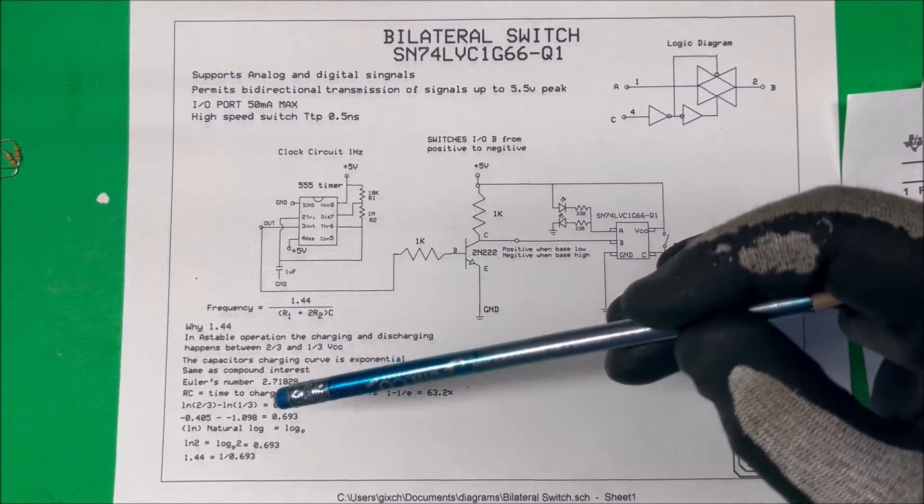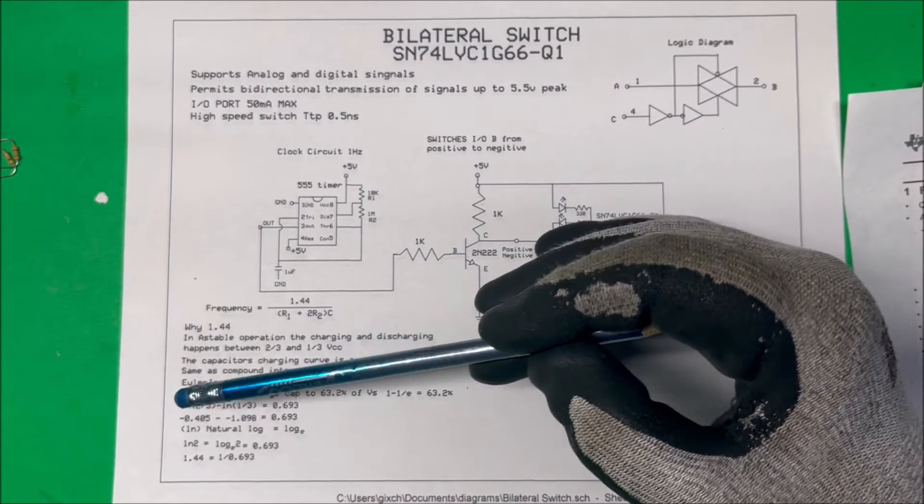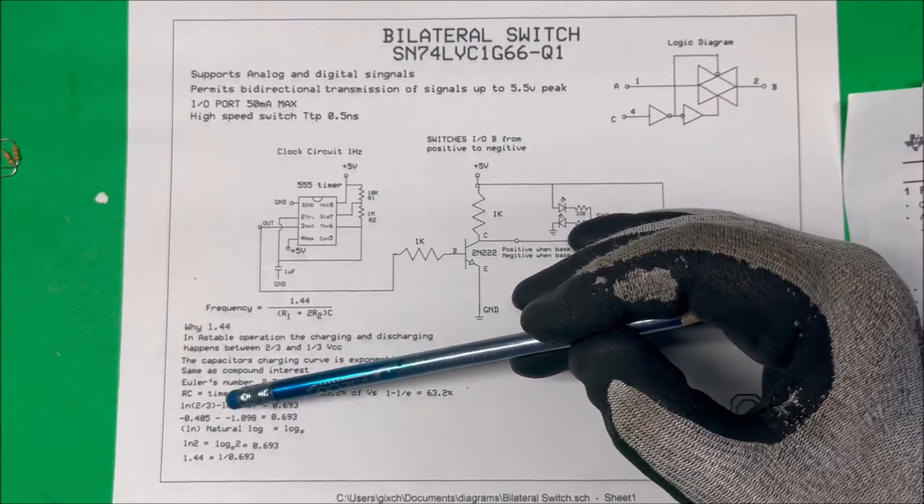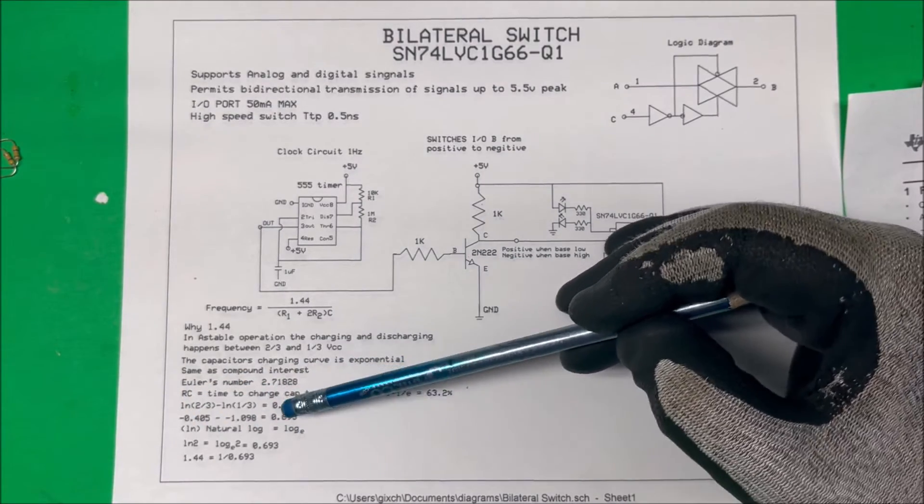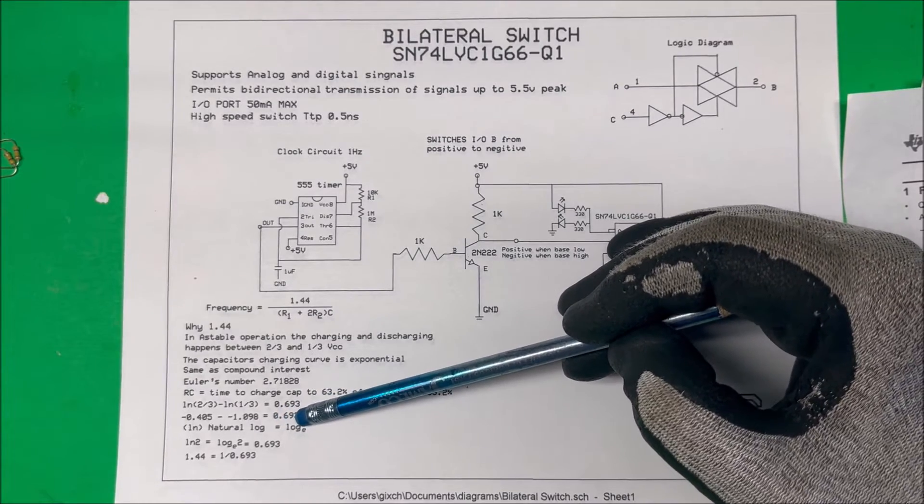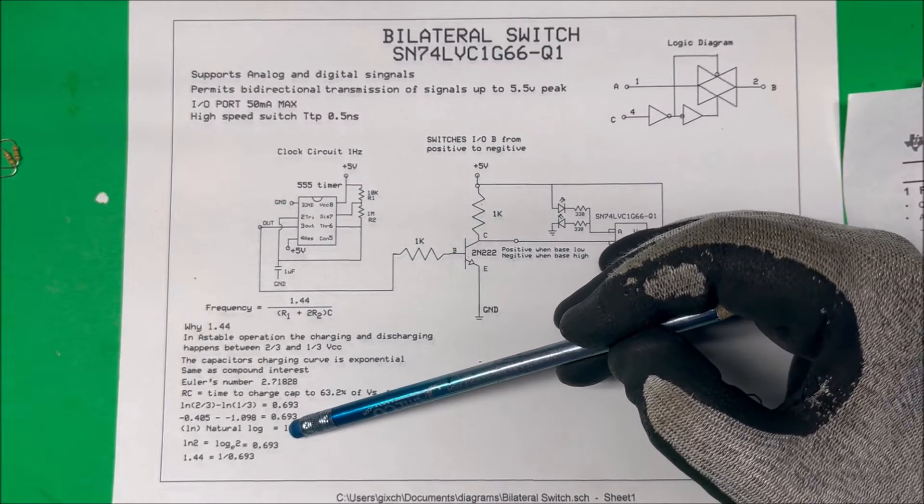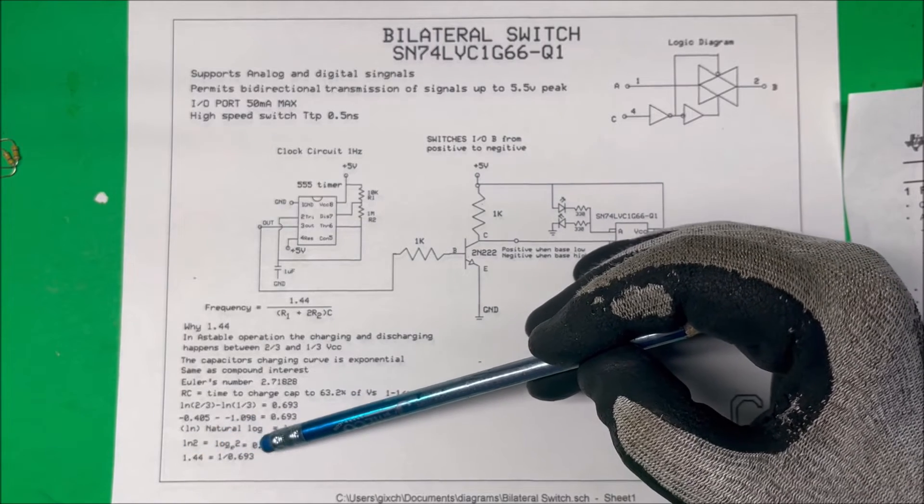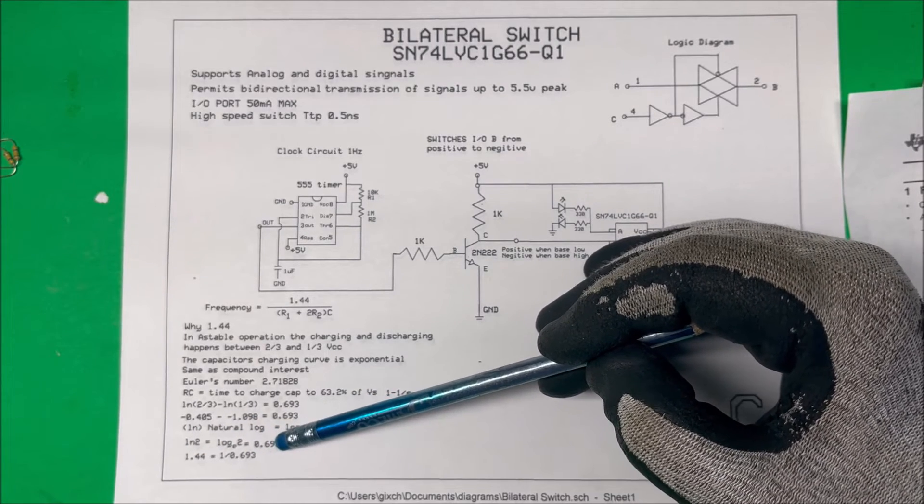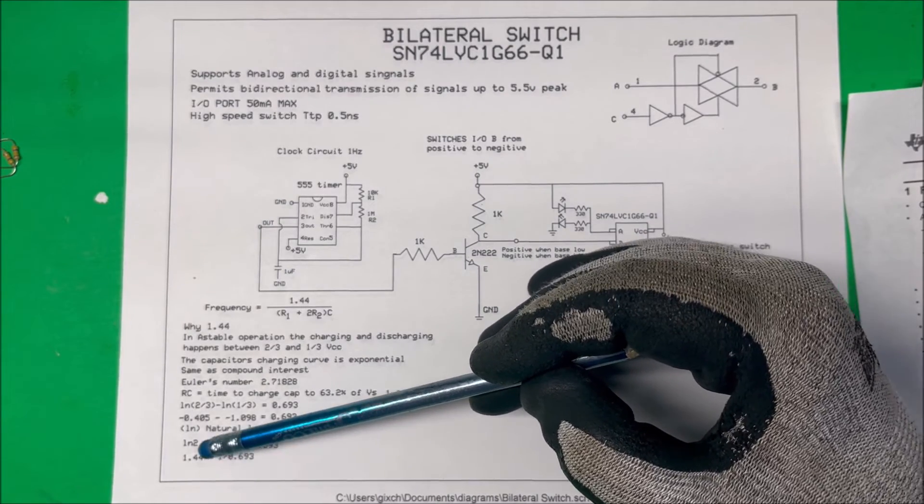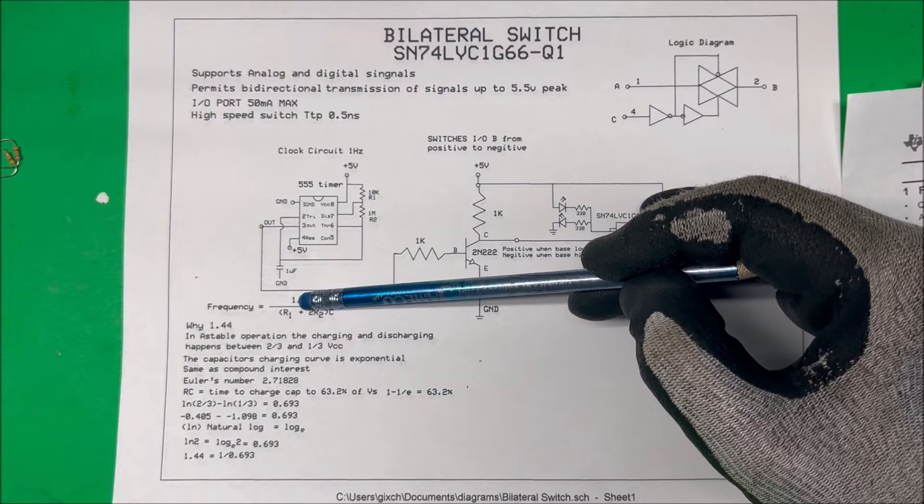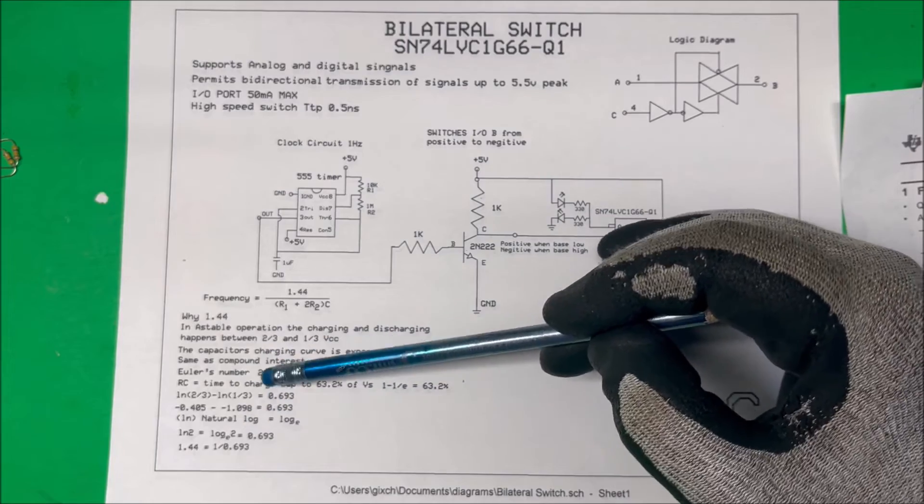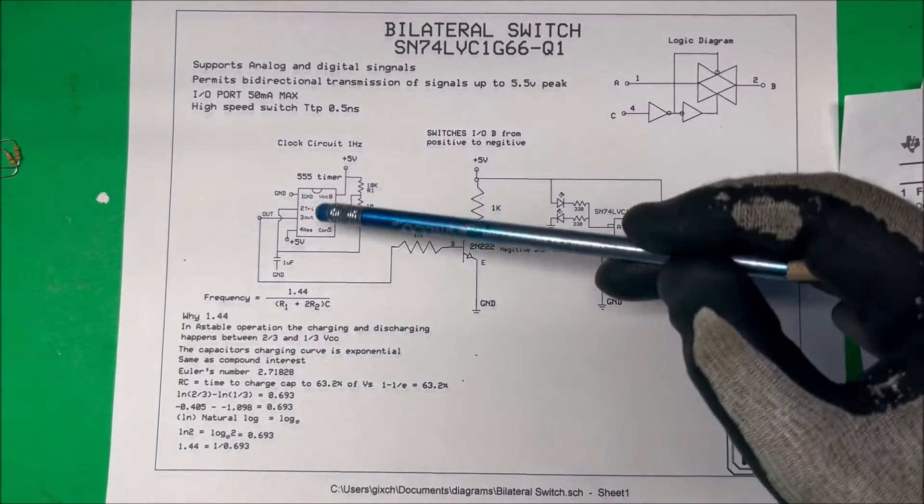We're not going to use that because we're charging from two-thirds to one-third. We take the natural log of two-thirds minus the natural log of one-third, and if we do the math it comes out to 0.6693. Your natural log on your calculator is probably log e, Euler's number. The natural log of two is 0.693, and 0.693 divided into one gives us 1.44. That's where we're getting our 1.44 from—just because of the way we're charging the circuit and using Euler's constant.